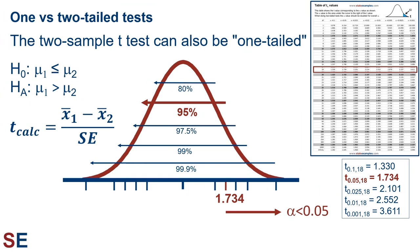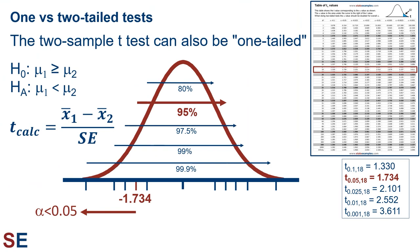The two-sample t-tests can also be one-tailed, just like the one-sample t-tests. We can create a null hypothesis in which the mean of population 1 is less than or equal to the mean of population 2, with the alternative hypothesis that the mean of population 1 is larger. In this case, we would only care about whether the t-calculated value has a positive value larger than the critical value corresponding directly to an alpha of 0.05. Similarly, we can create a null hypothesis in which the mean of population 1 is greater than or equal to the mean of population 2, with the alternative that the mean of population 1 is smaller — we would then only care about a negative t-calculated value less than the negative critical value at alpha of 0.05. We can only do one-tailed t-tests when we have a reason aside from our data to do so; we cannot look at our sample means first and then decide to do a one-tailed test based on that information.